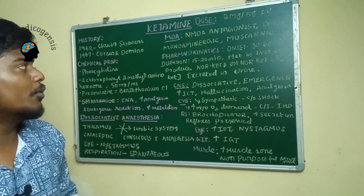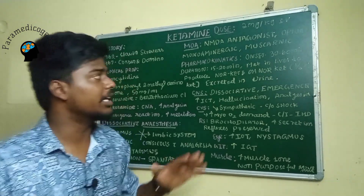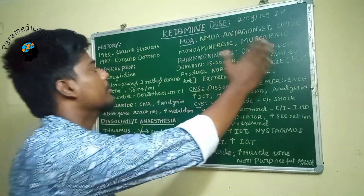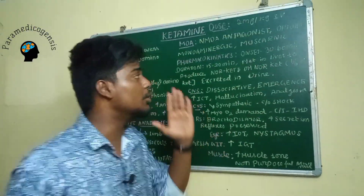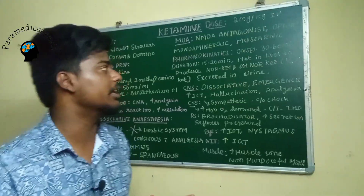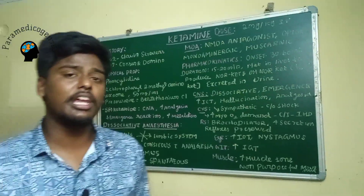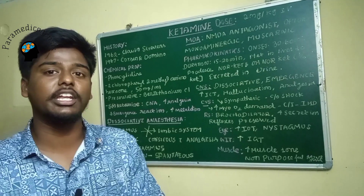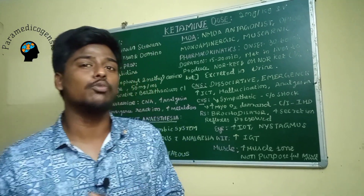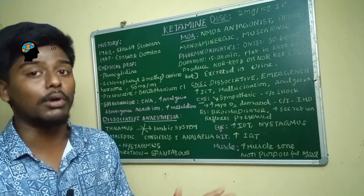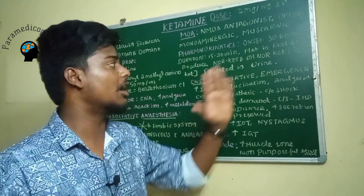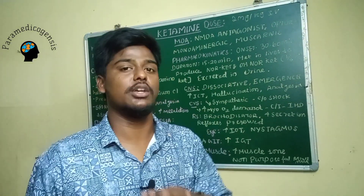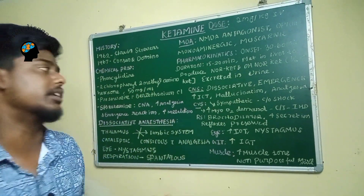The pharmacokinetics of ketamine: the onset is 30 to 60 seconds and the duration is 10 to 20 minutes. Ketamine is metabolized in the liver to produce norketamine and hydroxynorketamine, which are one-third as potent as the conventional ketamine. It is excreted via urine.